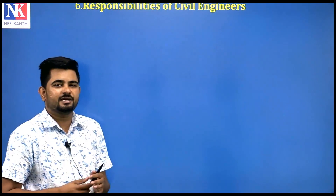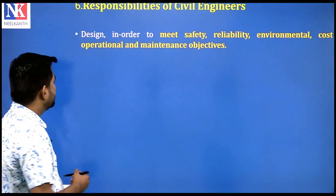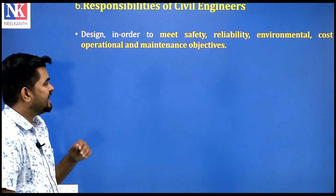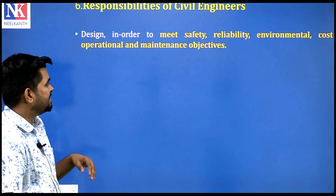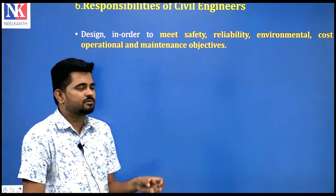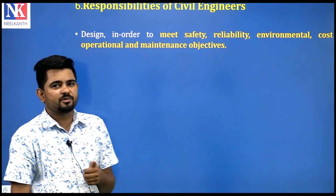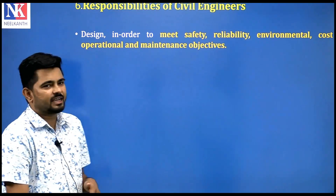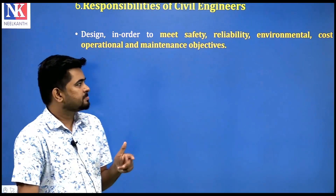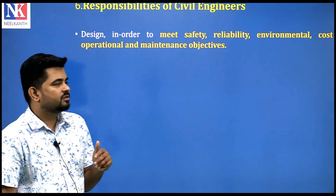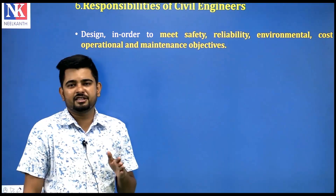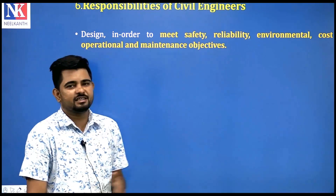The civil engineer's responsibility is to design in order to meet safety, reliability, environmental, cost, operational and maintenance objectives. If a civil engineer is given a job, these five things must be addressed: safety, economic viability, reliability, cost-effectiveness, and minimal maintenance.